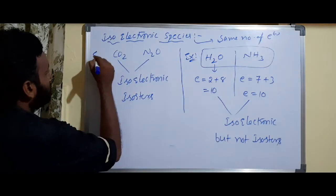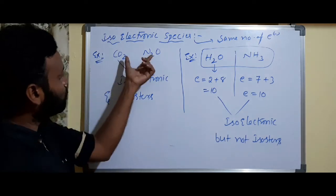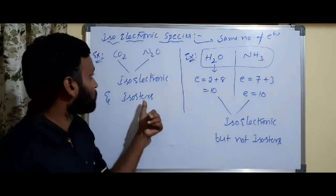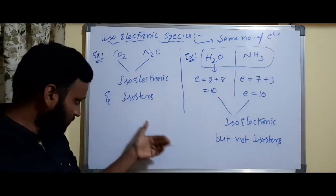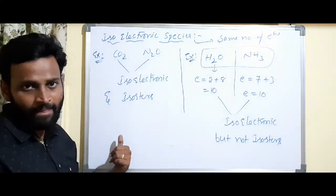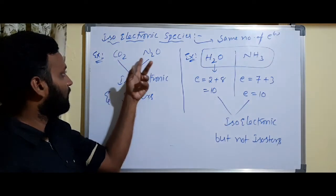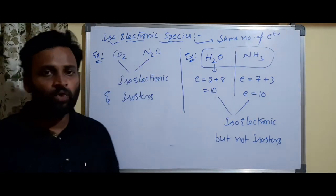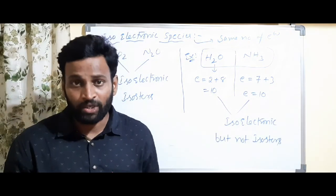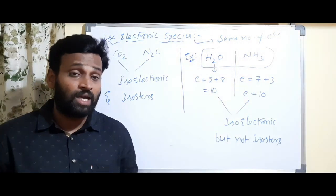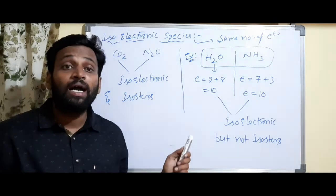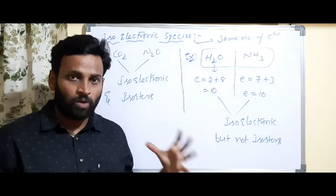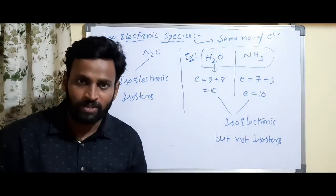To summarize: CO2 and N2O are isoelectronic as well as isosters — 22 electrons each and 3 atoms each. H2O and NH3 are isoelectronic but not isosters. Write down your notes carefully and practice all these concepts.